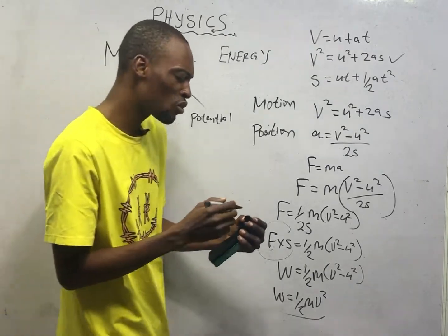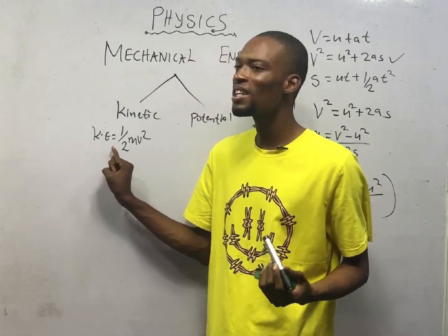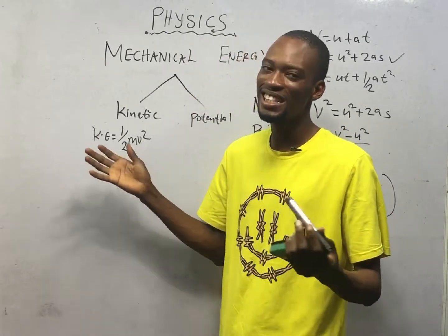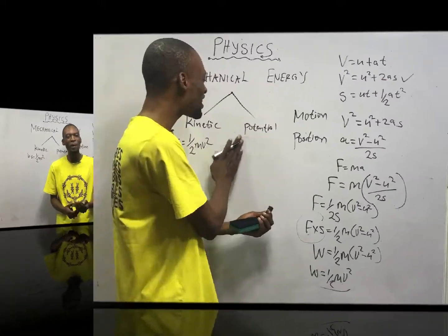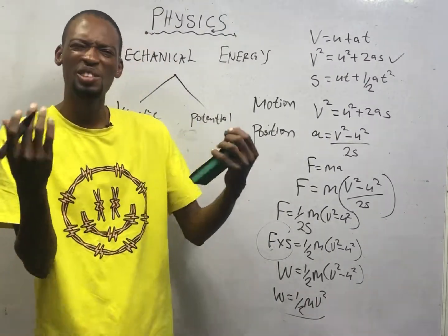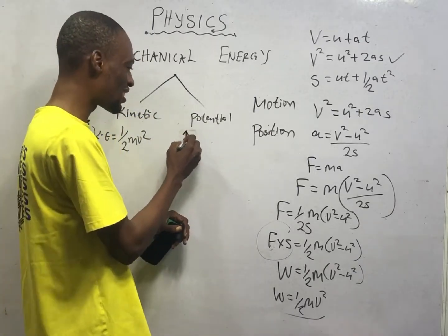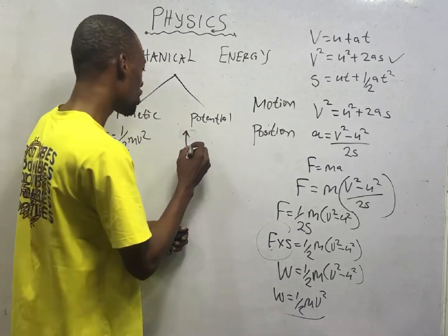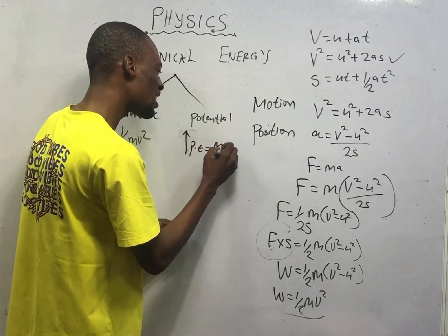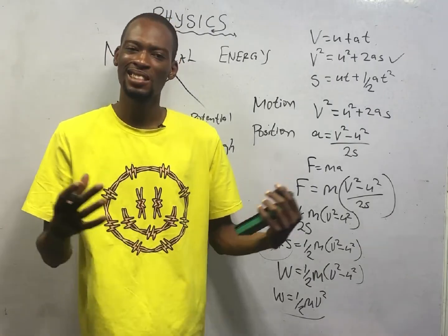Potential energy, on the other hand, is the energy a body possesses due to position — due to height. Potential energy acts against gravity. Therefore, potential energy is denoted by PE and it equals MGH — mass times gravity times height.